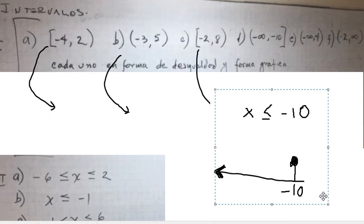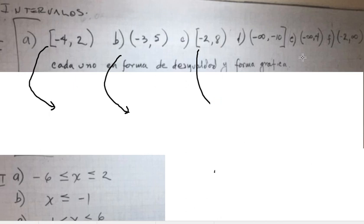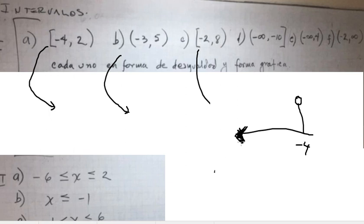Now let's go to the next one. We do similarly — this one uses positive four, not negative four. So s is smaller than positive four, and we highlight the arrow going to negative infinity.